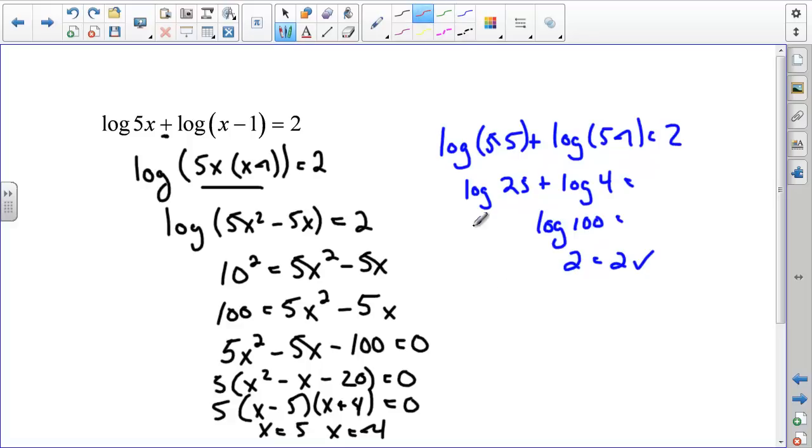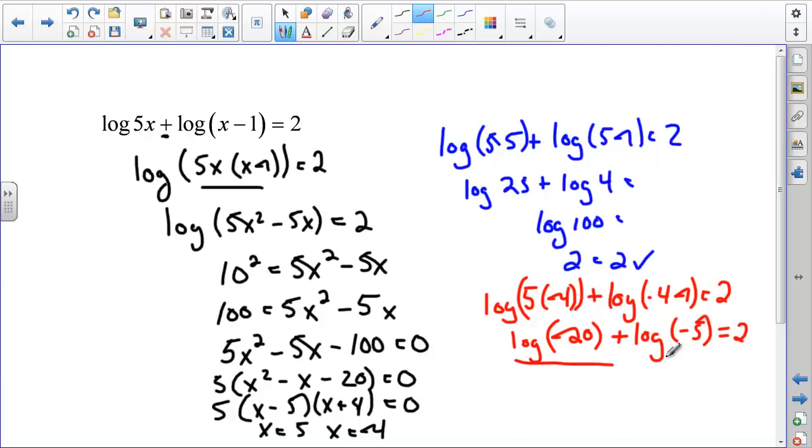Now, when I check the other one, I get the log of 5 times negative 4, and that should send up a red flag right there, negatives are bad news, plus log of negative 4 minus 1. When I do this, I get the log of negative 20 plus the log of negative 5. Right here is when I stop, because I see I'm taking the log of negative 20 and the log of negative 5, and so that's not possible. It's not in the domain. If you type it in on your calculator, log of negative 20, it doesn't work. So this right here is an extraneous solution, and so our only solution is x equals 5.